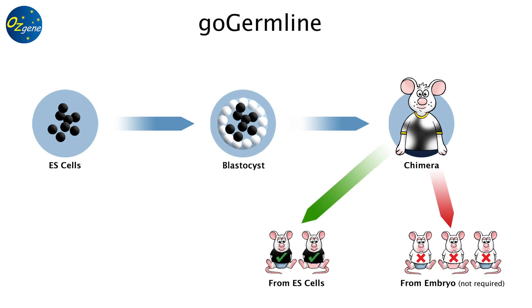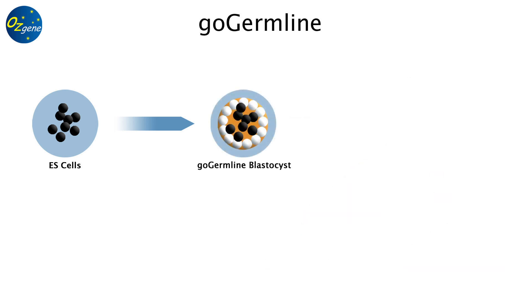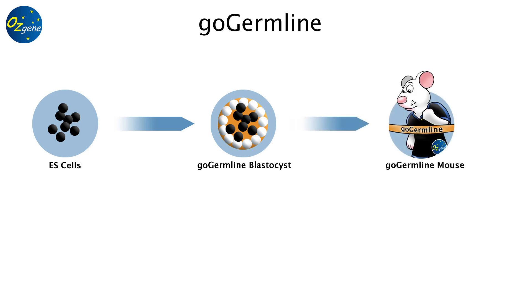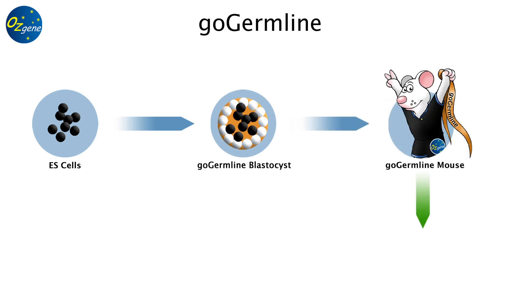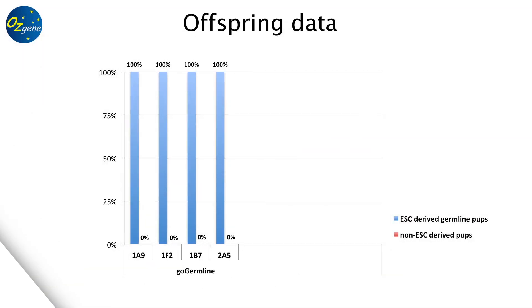With GoGermline you use GoGermline blastocysts to generate GoGermline mice. When these mice are bred you only get ES cell derived offspring. With GoGermline you get no offspring from the host, only from the ES cell.